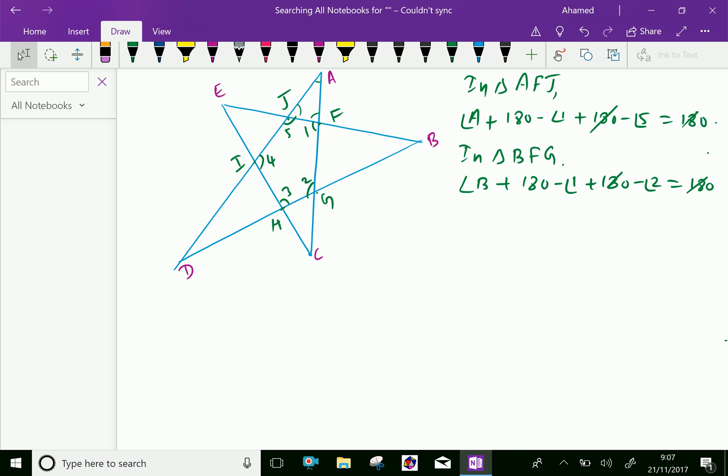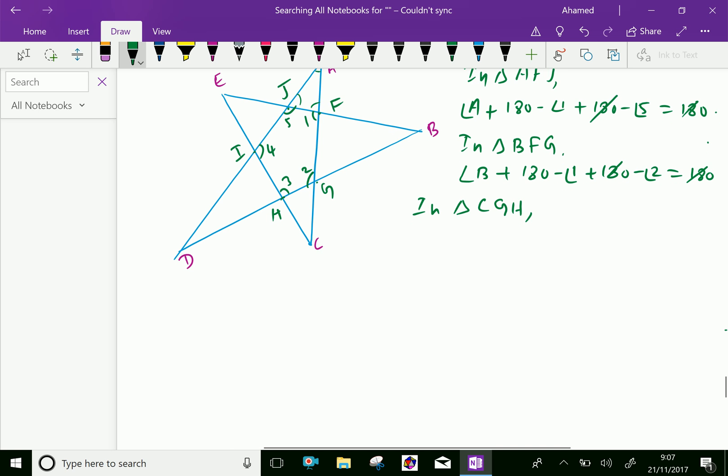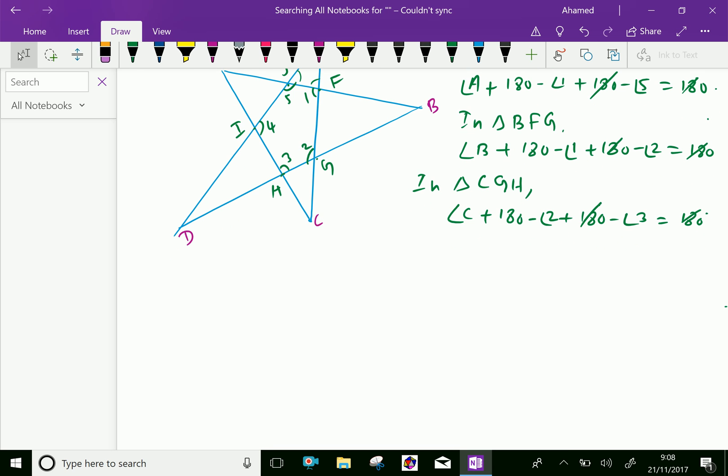Similarly, another triangle CGH, we can see angle C plus 180 minus angle 2 plus 180 minus angle 3 equal 180 degrees. So this 180 is cut, here 180 is cut.